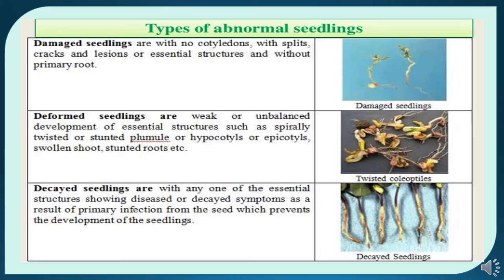The types of abnormal seedlings can be classified as damaged, deformed, and decayed seedlings. Damaged seedlings are those with no cotyledons, with splits, cracks, and lesions in essential structures, or without a primary root. Deformed seedlings show weak or unbalanced development of essential structures, such as spirally twisted or stunted plumule, hypocotyl, or epicotyl, and swollen shoot or stunted roots. Decayed seedlings are those where any essential structure shows disease or decay symptoms as a result of primary infection from the seed, preventing seedling development.